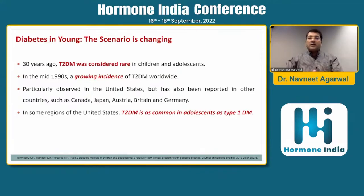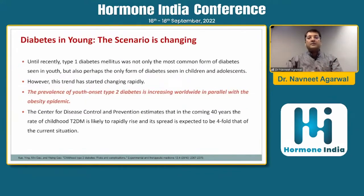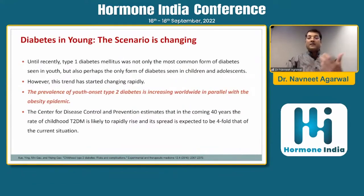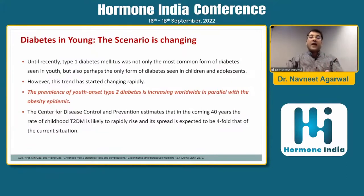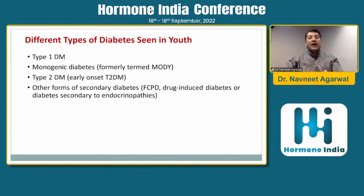The scenario is changing. There is a growing prevalence in the type of diabetes, and the prevalence of youth-onset type of diabetes is increasing worldwide in parallel with the obesity epidemic. We know there is an epidemic of obesity alongside the epidemic of diabetes.